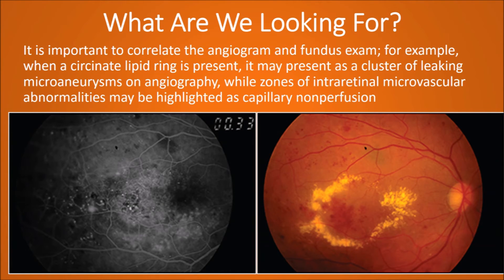It is important to correlate the angiogram and fundus exam. For example, when a circinate lipid ring is present on fundus examination, it may present as a cluster of leaking microaneurysms on angiography, while zones of intraretinal microvascular abnormalities may be highlighted as capillary non-perfusion. We should not mistake hyperfluorescence on angiogram due to window defect — because of RPE atrophy or old laser treatment — with leaking microaneurysms. This can be avoided by careful fundus examination and history collection. However, OCT can be very helpful in such cases to rule out central macular thickening.